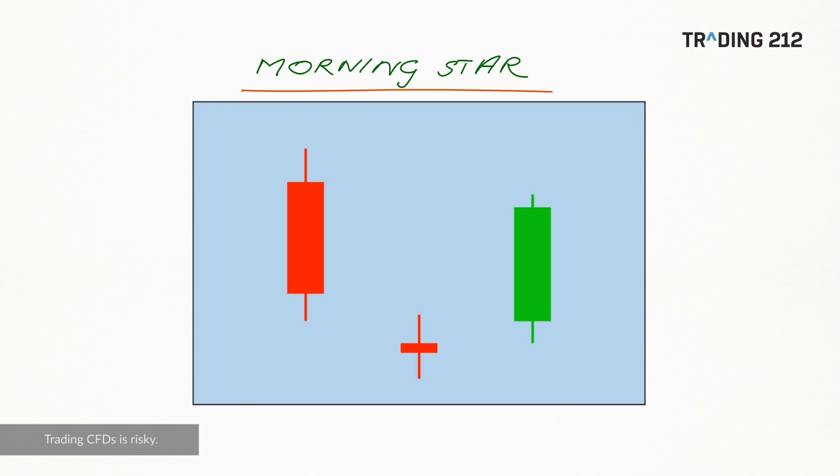So the pattern is made up first of a long red candle. Next, a candle with a very small body that opened lower than the previous close. In other words, it is gapped.